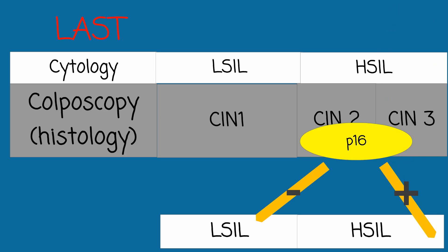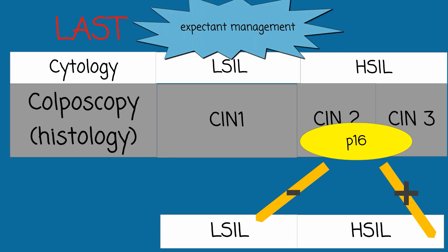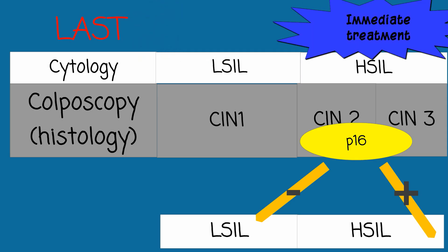To summarize: when a pap smear is abnormal, a colposcopy should be performed. The results of colposcopic directed biopsies triage the next step of management. Expectant management can be used for CIN 1 or LSIL because of its high rate of regression and low rate of progression. Immediate treatment is needed for CIN 2, CIN 3, or HSIL because of their higher rates of progression to cervical cancer.